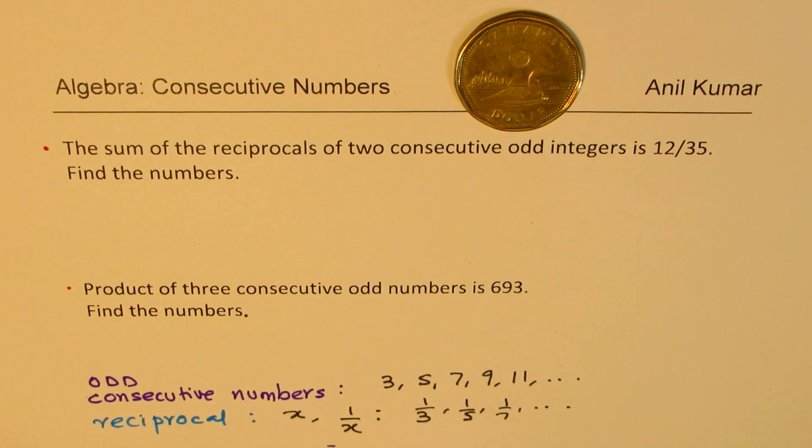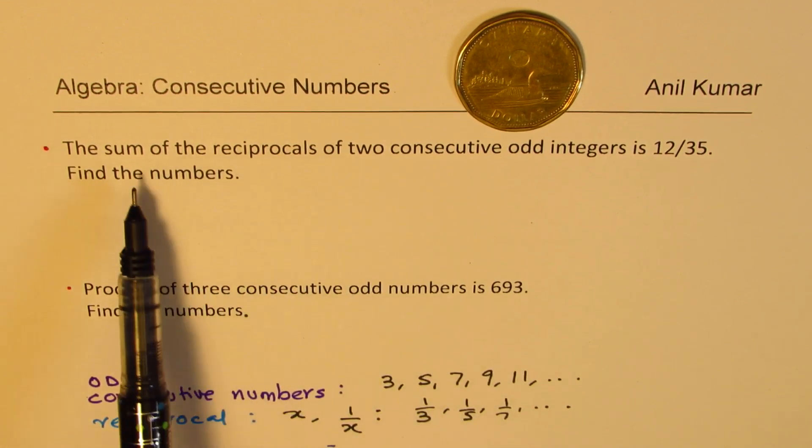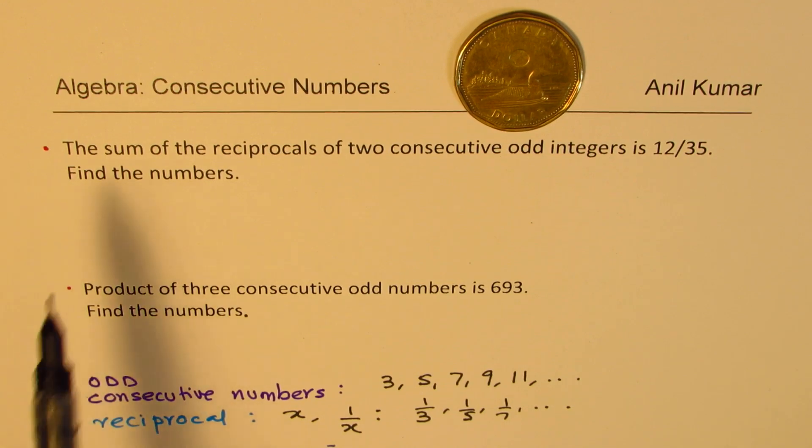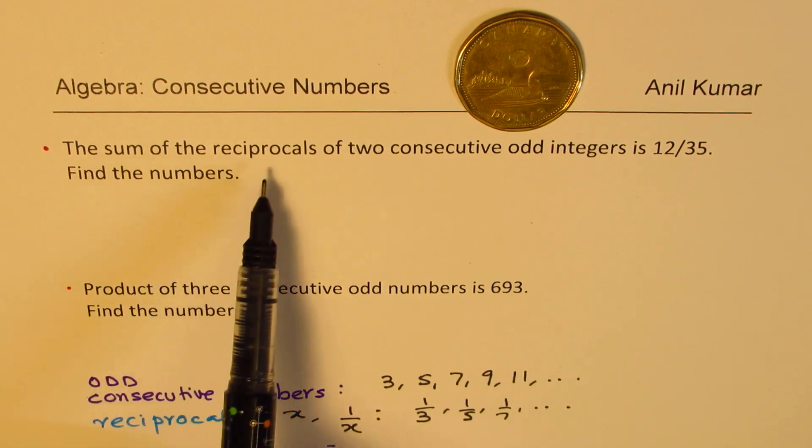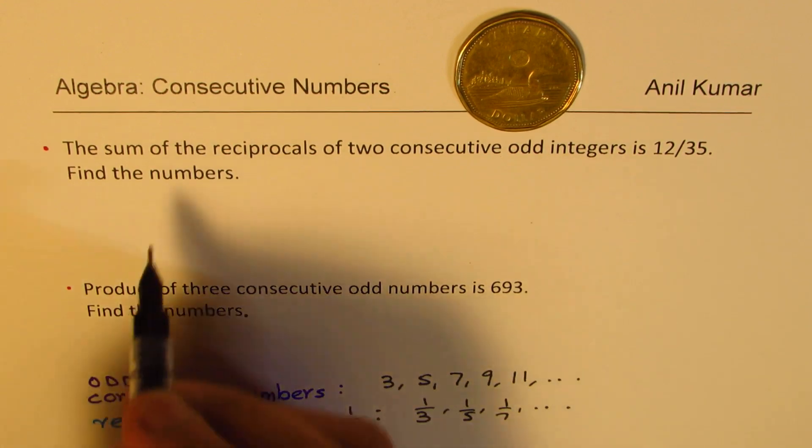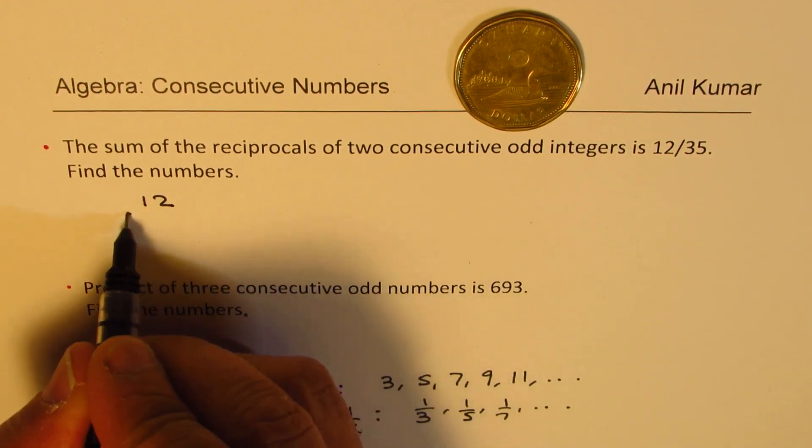Now, once we understand this strategy, now look into the solution of these questions. The first one here is the sum of reciprocals of two consecutive odd integers is 12 over 35. So let me write down 12 over 35.